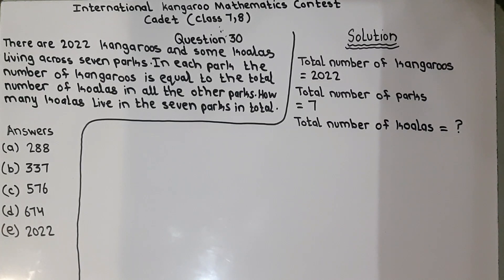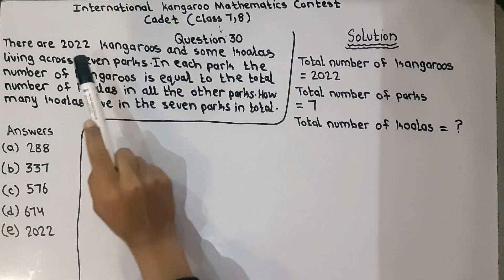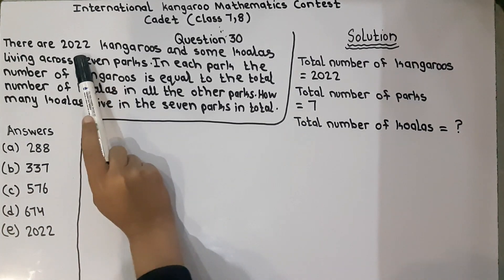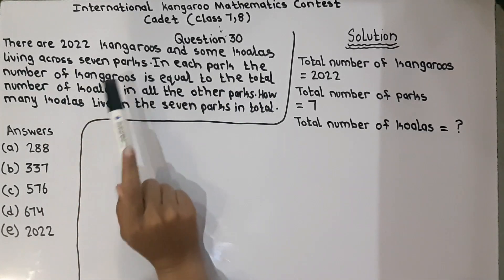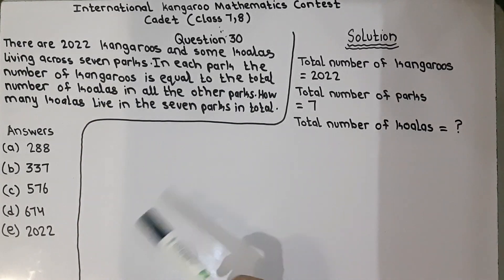The question is: there are 2,022 kangaroos and some koalas living across seven parks. They are saying that 2022 kangaroos and some koalas are living across 7 parks. In each park, the number of kangaroos is equal to the total number of koalas in all the other parks.